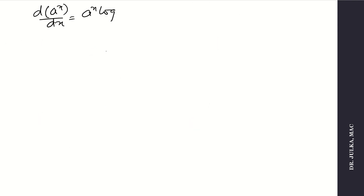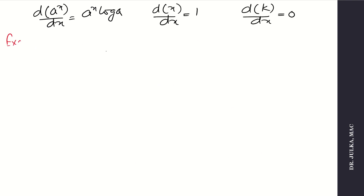Some more formulas: differentiation of a to the power x is a to the power x times log a. Differentiation of x with respect to x is 1. And the derivative of any constant is 0.